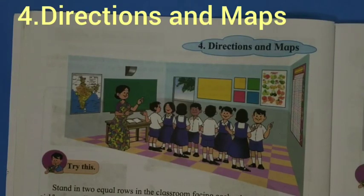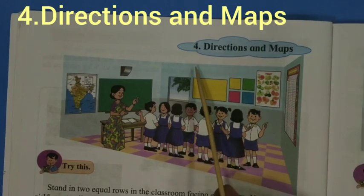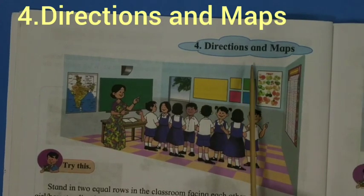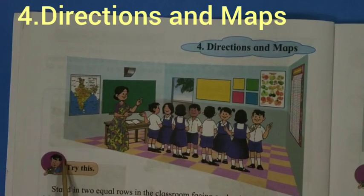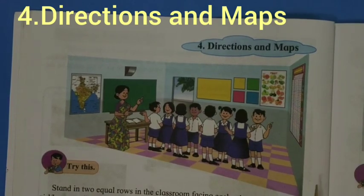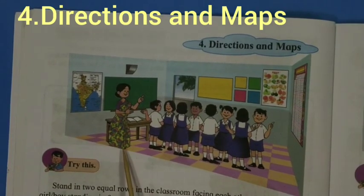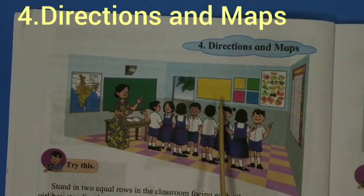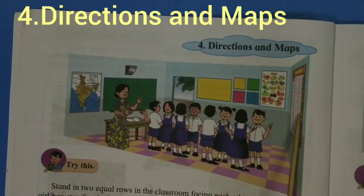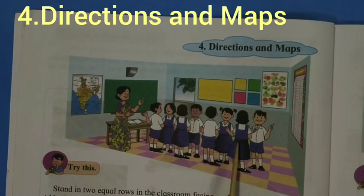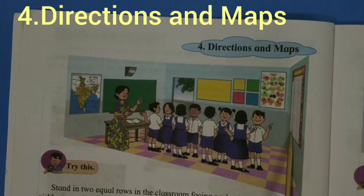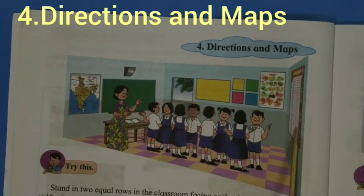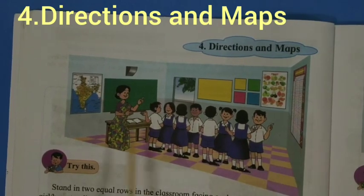Hello children, today we are going to see lesson number 4: Directions and Maps. Here one picture is given, so let us see. The teacher is standing and so many charts are on the walls. Students are standing, and the teacher is pointing to the chart. This chart is in front of the teacher.